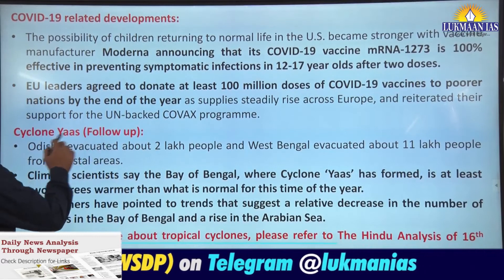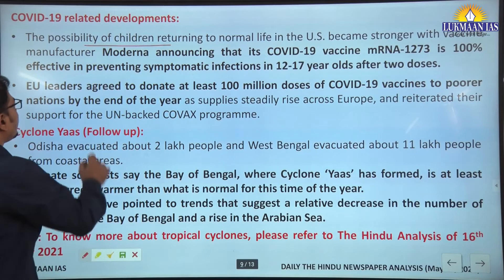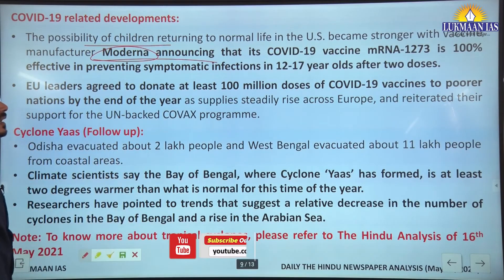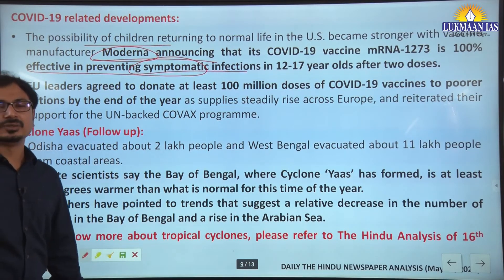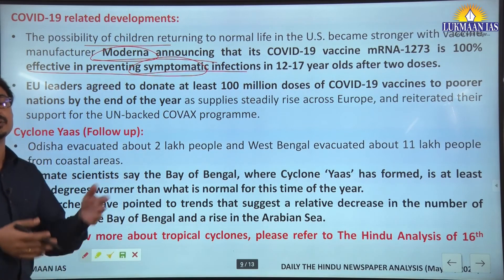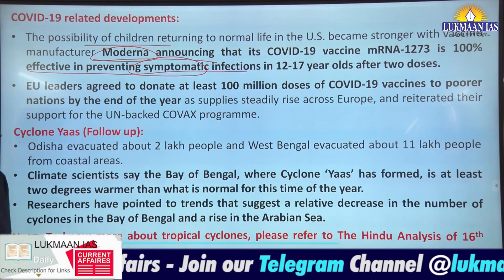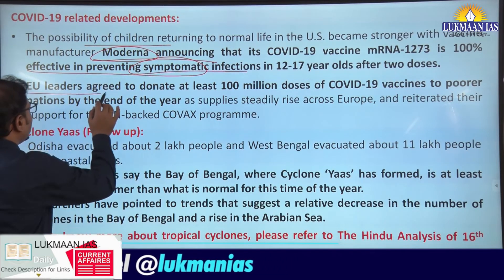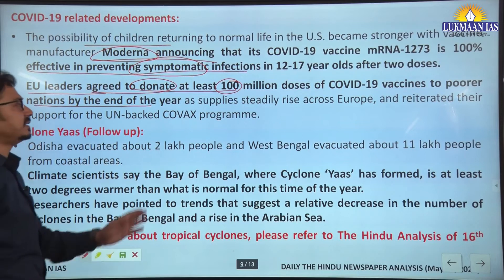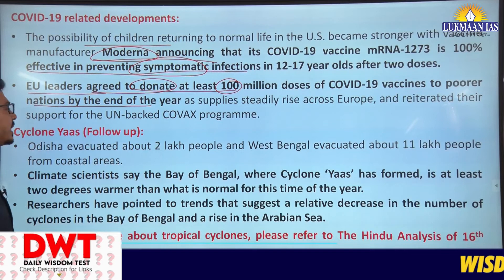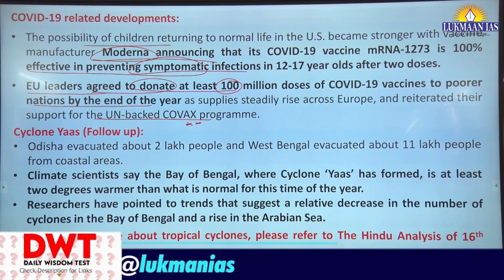Regarding COVID-19 developments: the possibility of children returning to normal life in the US became stronger, with vaccine manufacturer Moderna announcing that its COVID-19 vaccine mRNA-1273 is 100% effective in preventing symptomatic infection in 12 to 17 year olds after two doses. After clinical trials, the company is now going to seek approval from the FDA, and in future India can also expect the import of this vaccine. European Union leaders agreed to donate at least 100 million doses of COVID-19 vaccines to poorer nations by the end of the year under the UN-backed COVAX program.